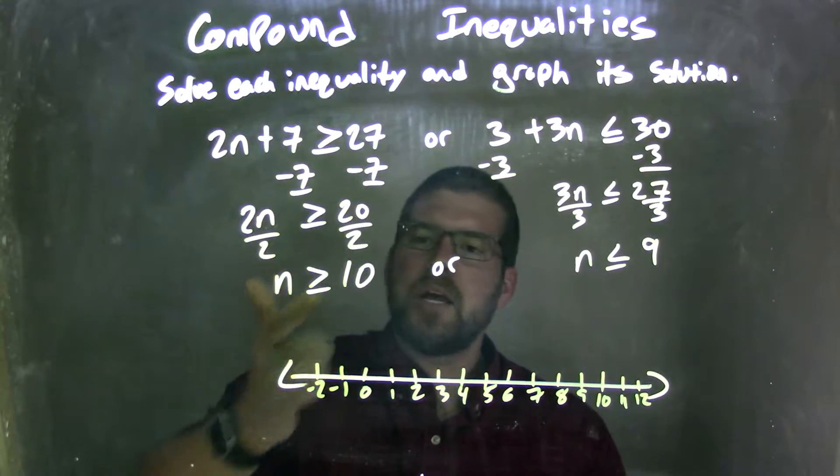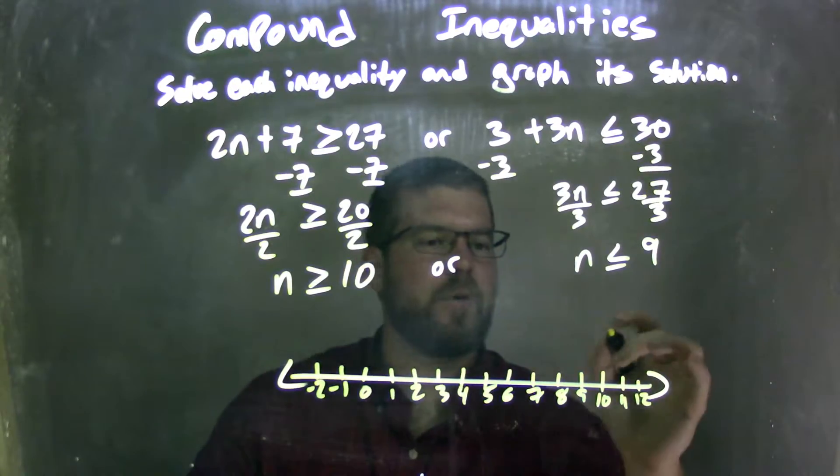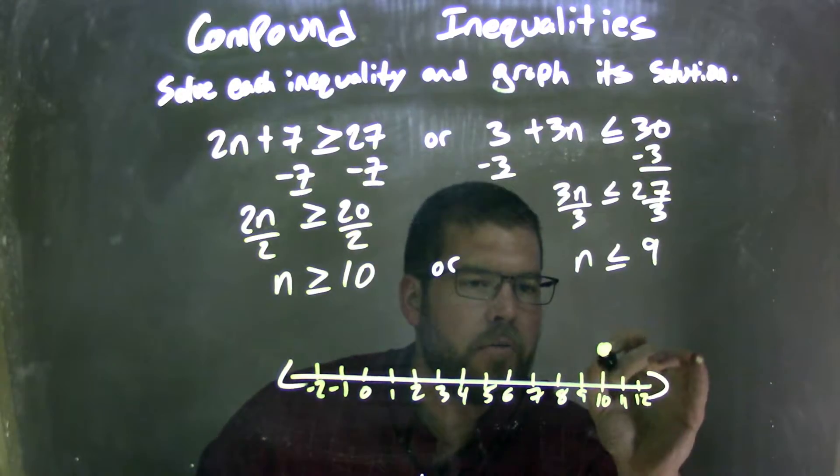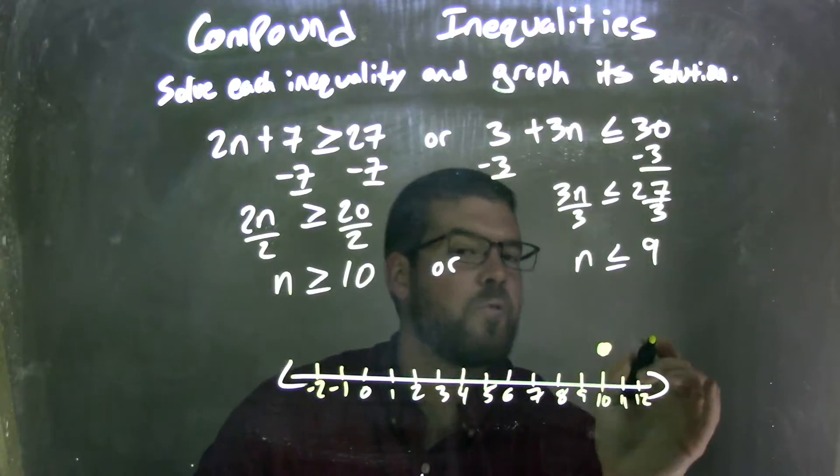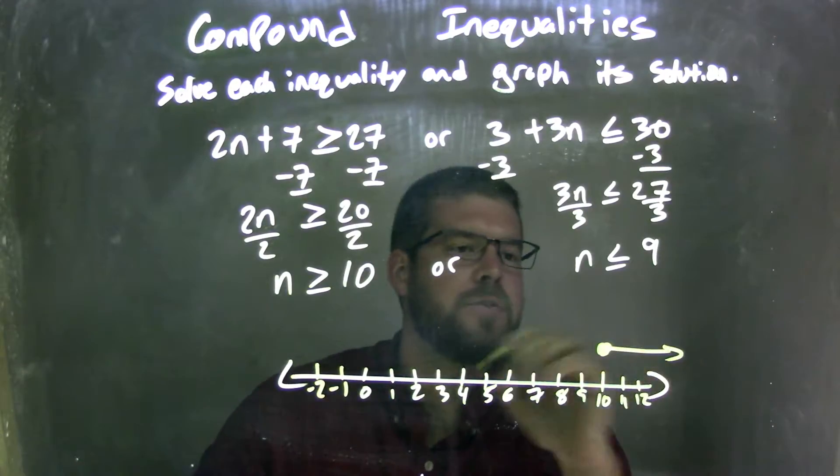So we said n is greater than or equal to 10. Well, at 10, it can equal 10, so I'm just going to put a closed circle right there at 10. And since n is greater than also 10, I'll put an arrow to the right.